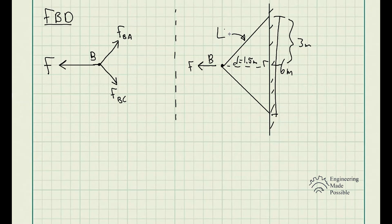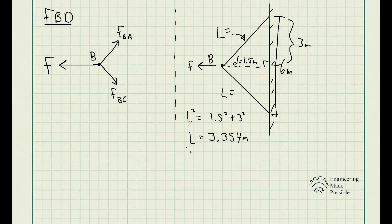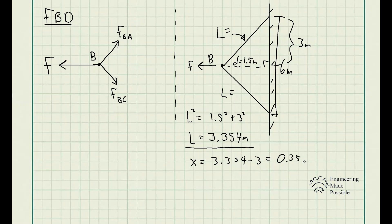We're able to solve for the length L of the spring once the force is applied. D equals 1.5 meters because there is a force pulling on it. Using the Pythagorean theorem, L squared equals 1.5 squared plus 3 squared. Square rooting that, we get a length of 3.354 meters — the total length of each spring after it's been stretched. How much has it been displaced? We take the stretched length 3.354 and subtract the original length 3, giving a displacement of only 0.354 meters. This is our X.